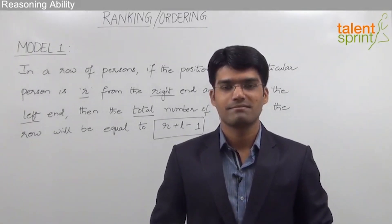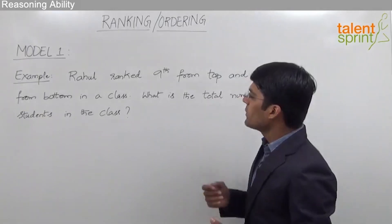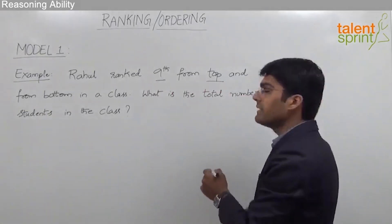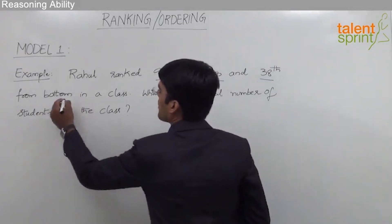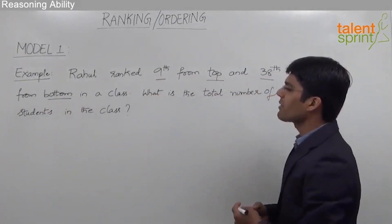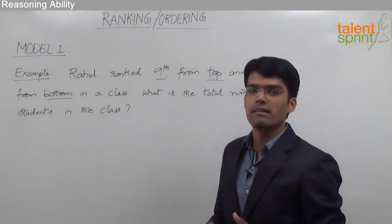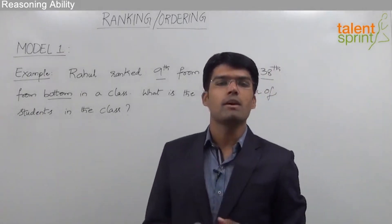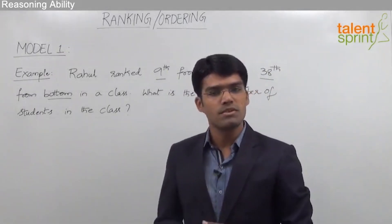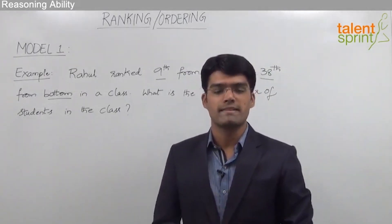Let's now take an example based on this model. The given question is: Rahul is ranked 9th from the top and 38th from the bottom in a class. What is the total number of students in the class? As we have already learned, we can find the total number of students when we know the position or rank of a person from both ends.